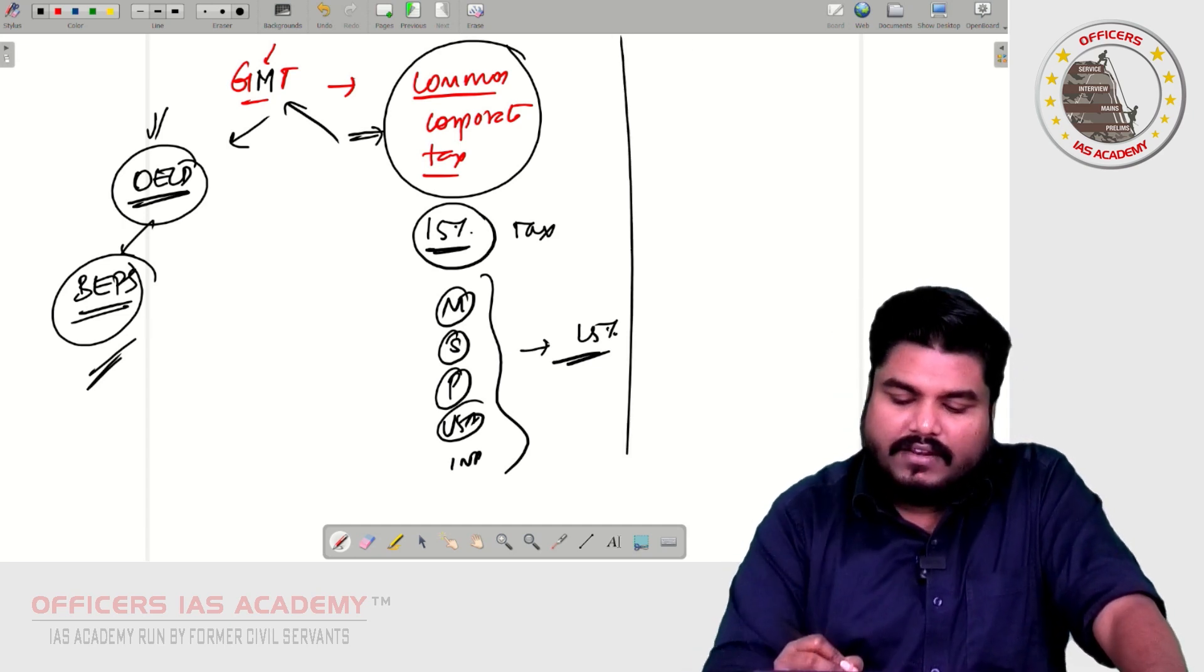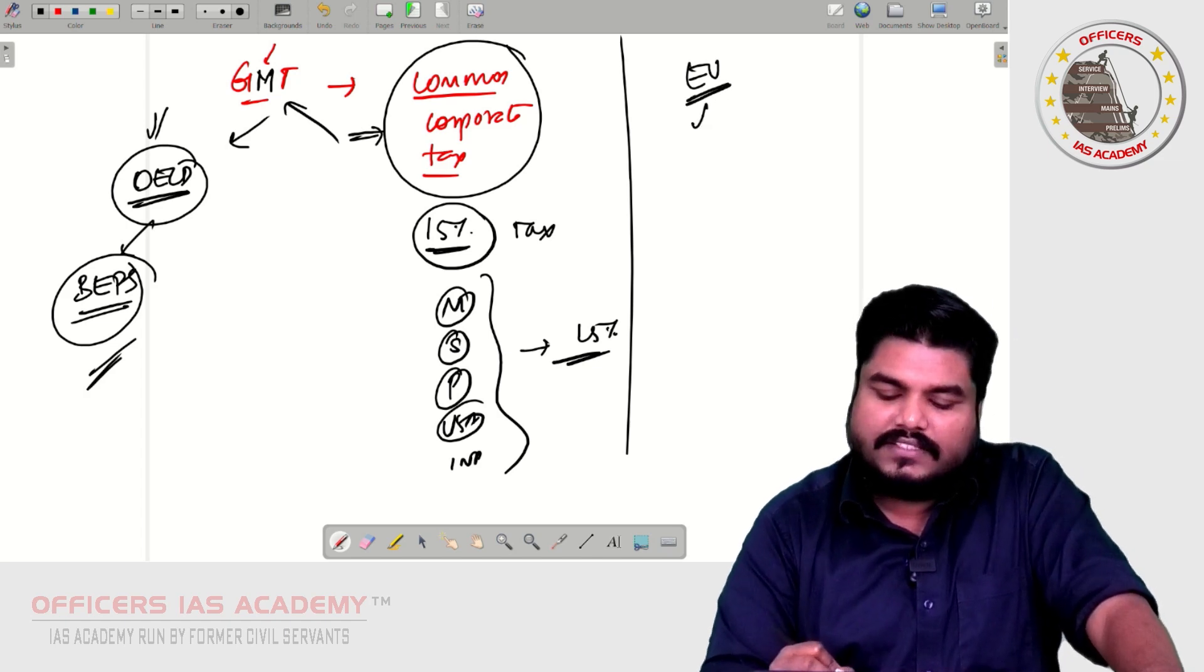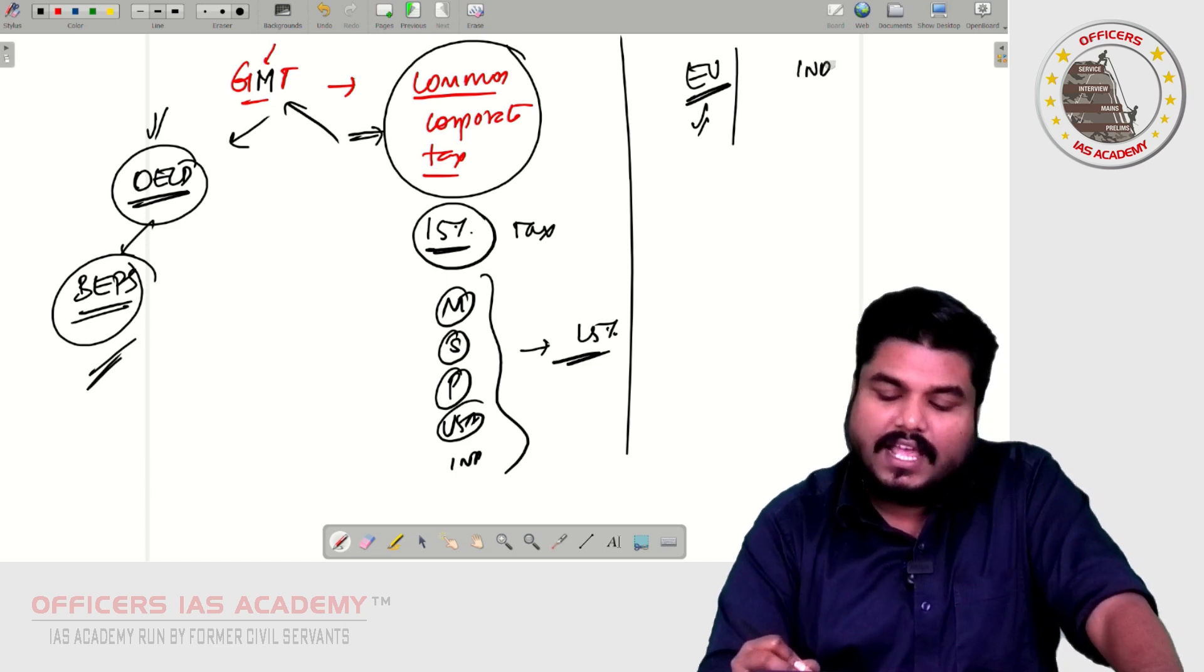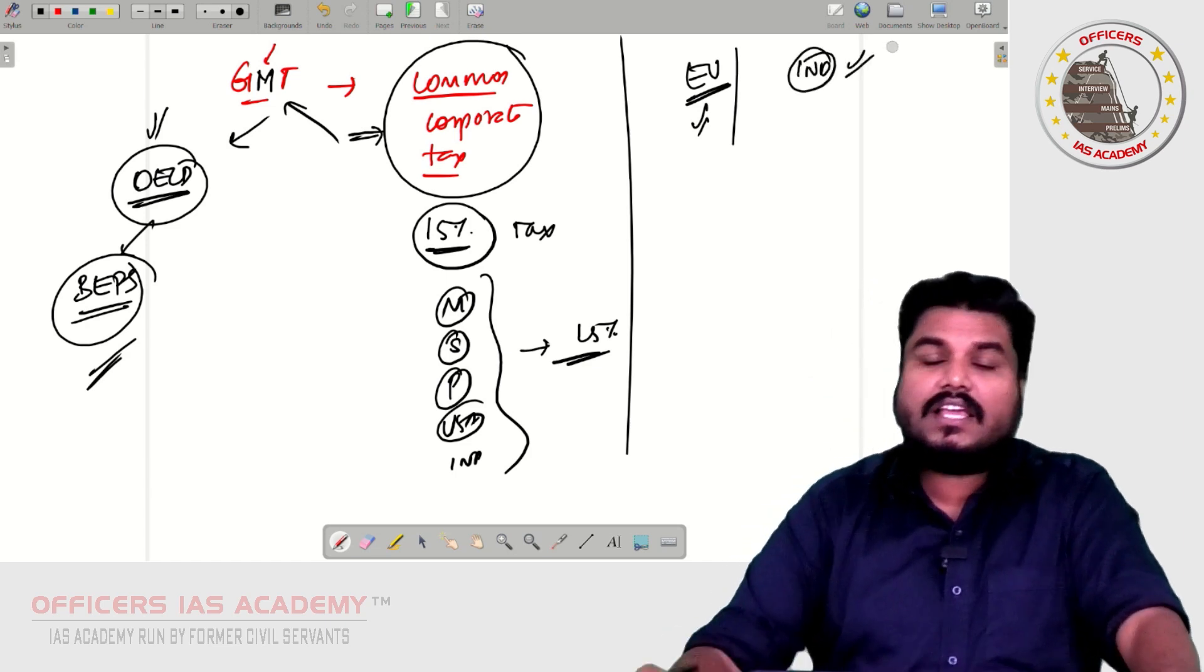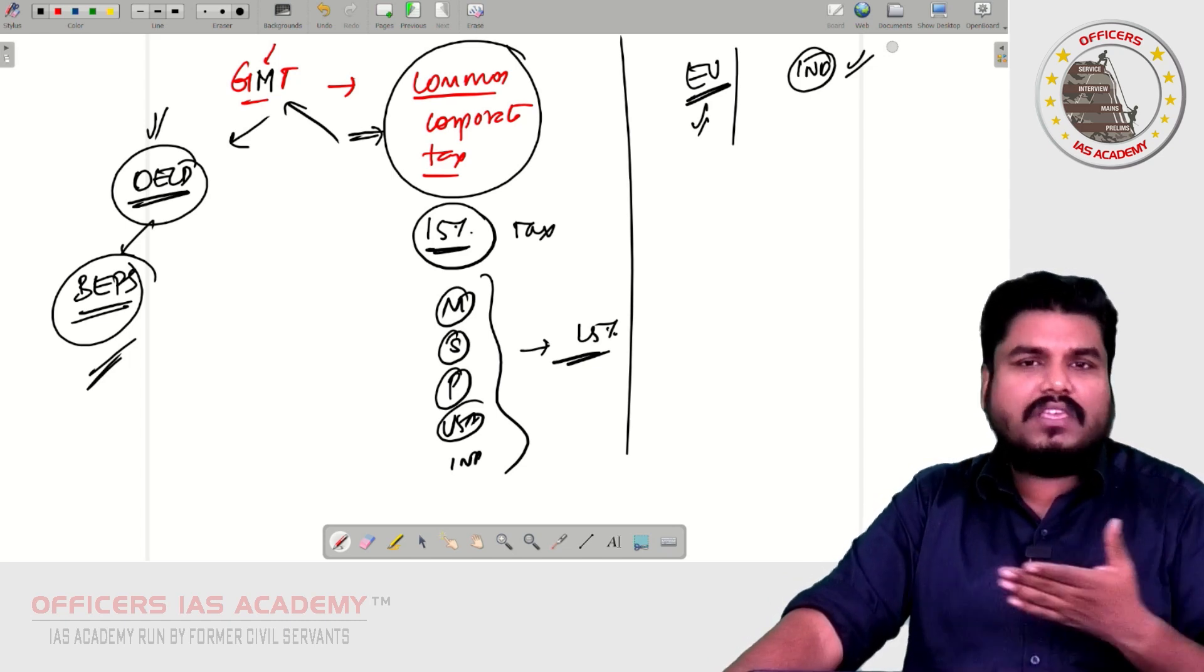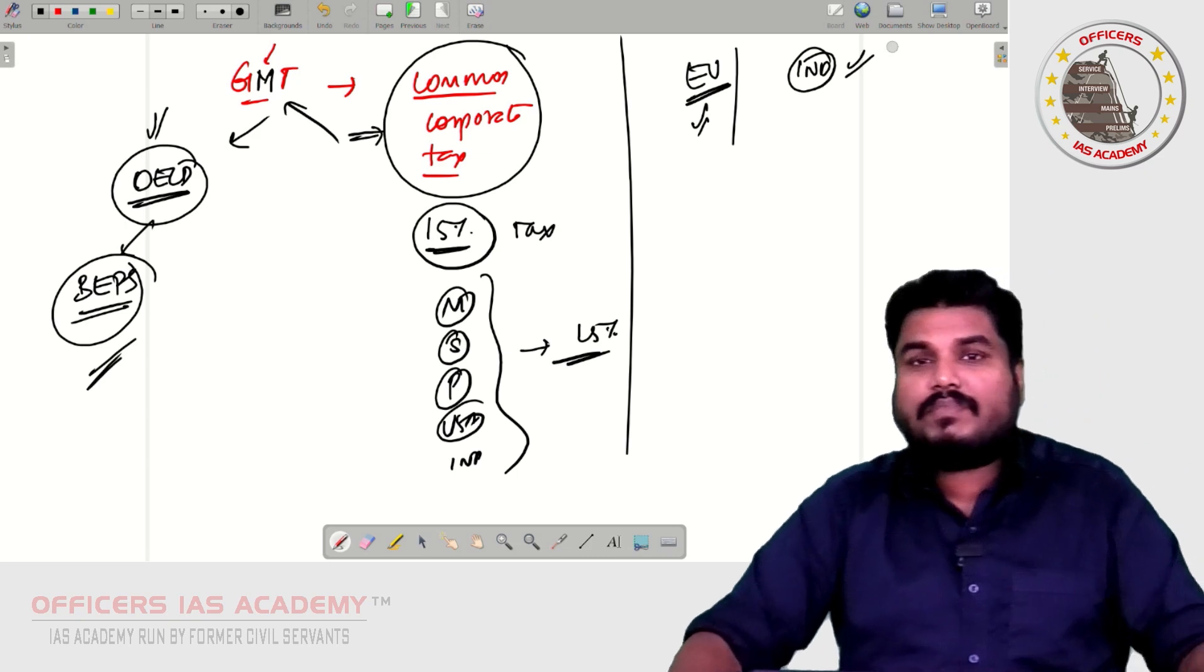European Union, they are okay with this. Many developing countries, they said okay with this. Now what is the stand of India? India is also happy. India is also happy because India is also losing huge amount of money, billions and billions of dollars India is losing because of BEPS. So India said we are also happy. But...